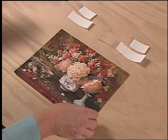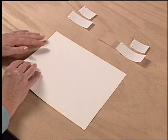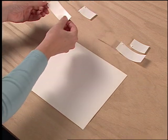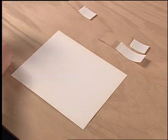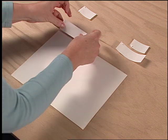To do a simple T-hinge mount, use a quality Framer's Tape. Apply small strips of tape across the top, back edge of the artwork.